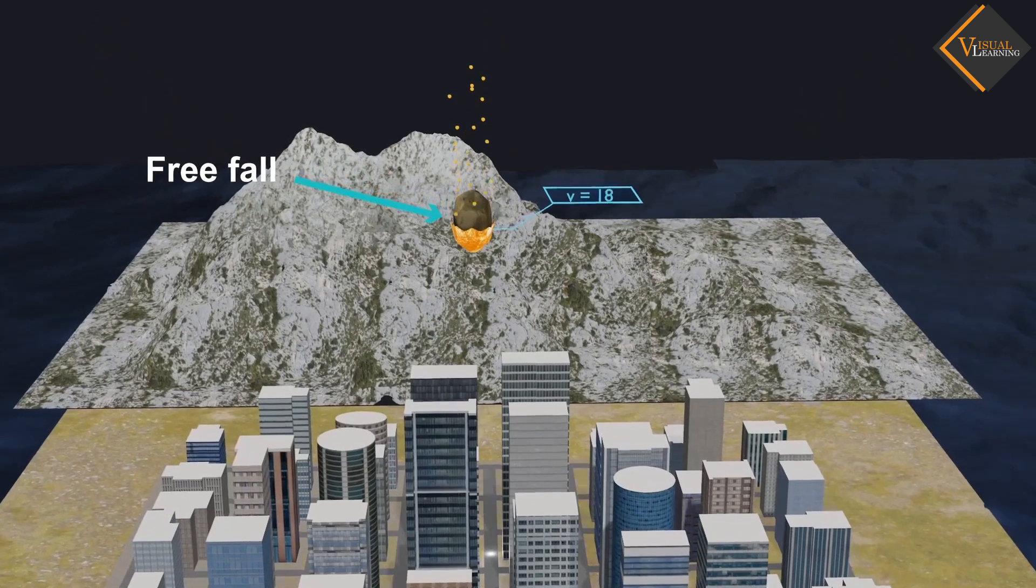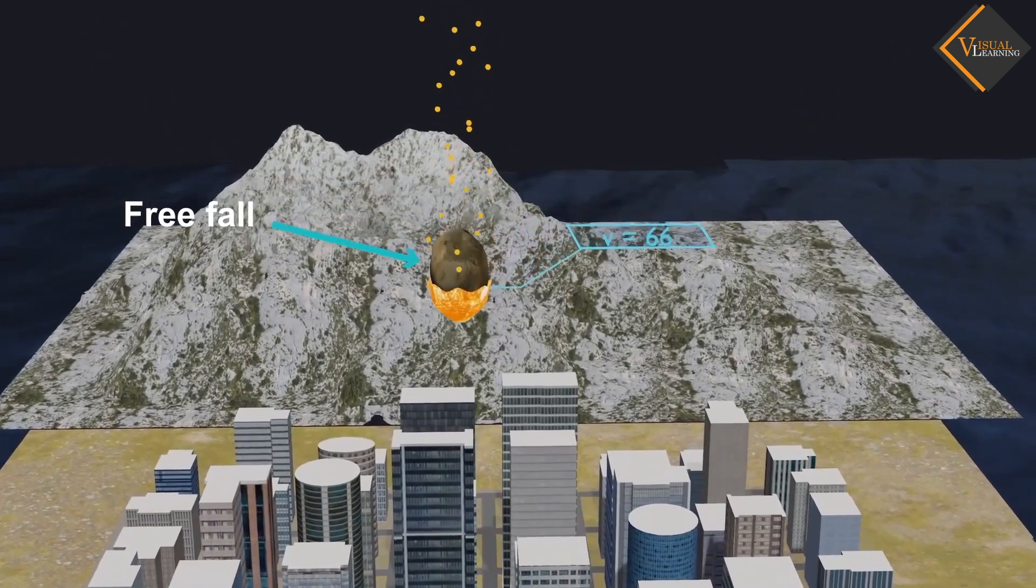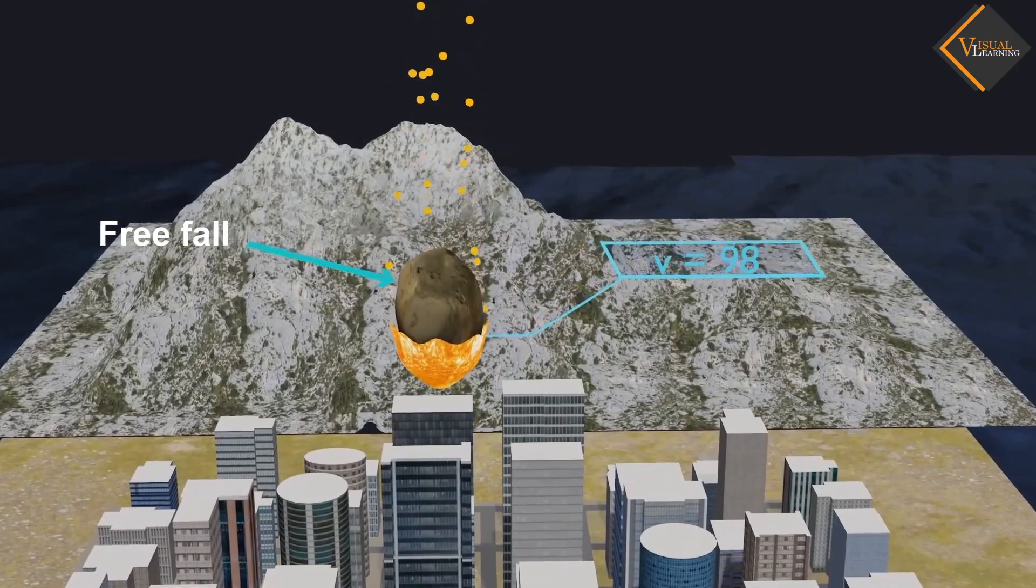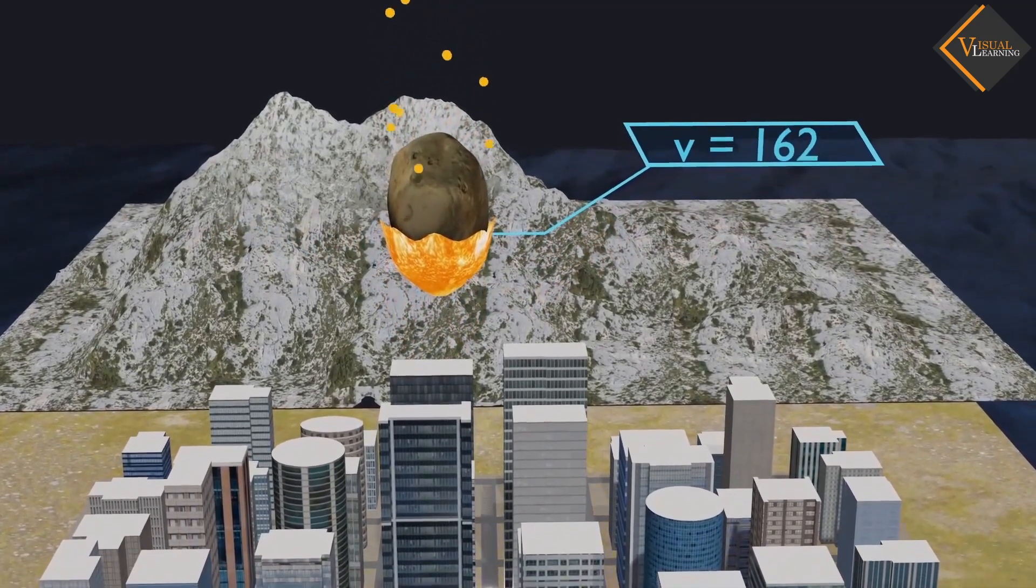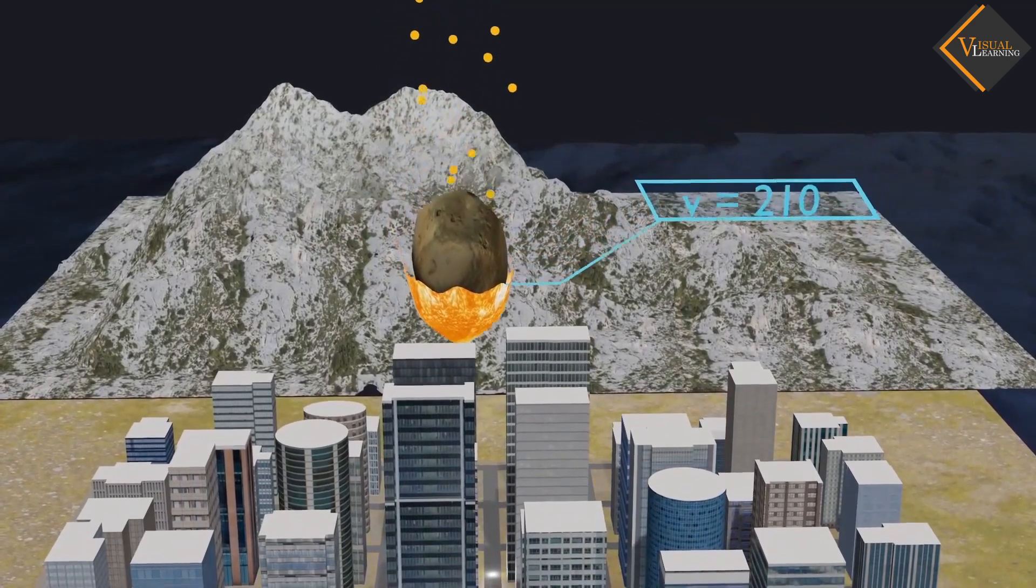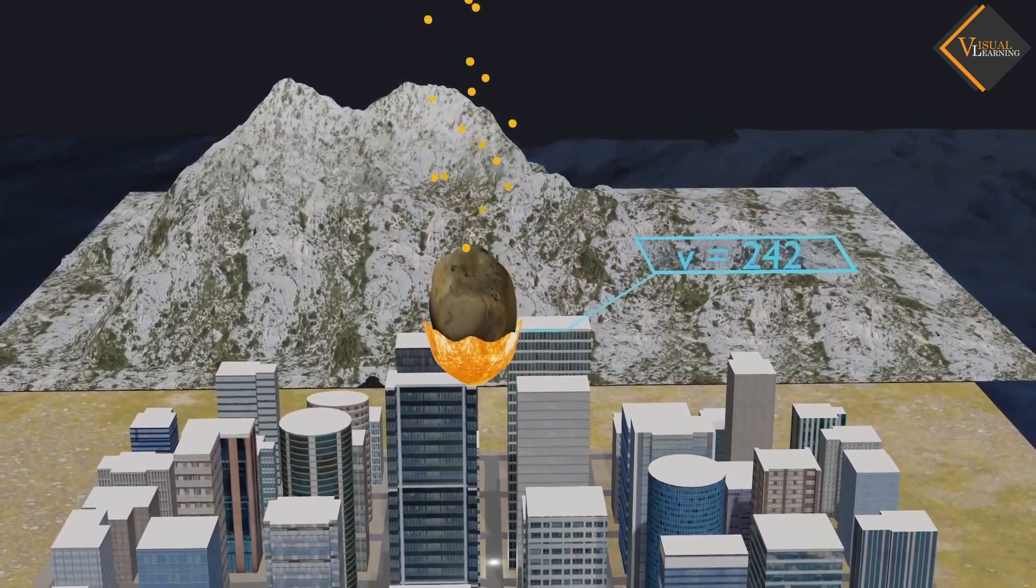Is there any change in the velocity of falling objects? While falling, there is no change in the direction of motion of the objects. But due to the Earth's attraction, there will be a change in the magnitude of the velocity.